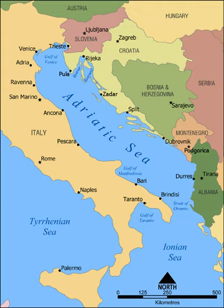It is divided into three basins, the northern being the shallowest and the southern being the deepest, with a maximum depth of 1,233 metres. The Otranto Sill, an underwater ridge, is located at the border between the Adriatic and Ionian Seas. The prevailing currents flow counterclockwise from the Strait of Otranto, along the eastern coast and back to the Strait along the western coast. Tidal movements in the Adriatic are slight, although larger amplitudes are known to occur occasionally. The Adriatic's salinity is lower than the Mediterranean's because the Adriatic collects a third of the fresh water flowing into the Mediterranean, acting as a dilution basin.